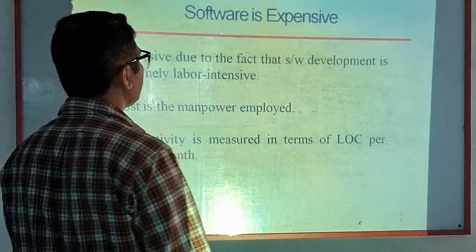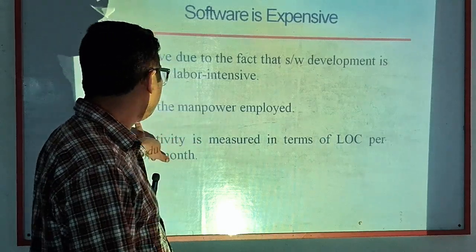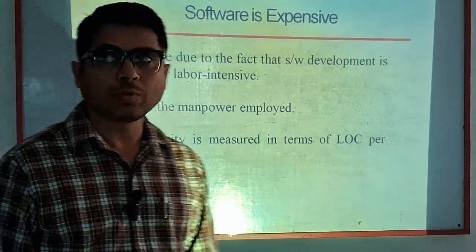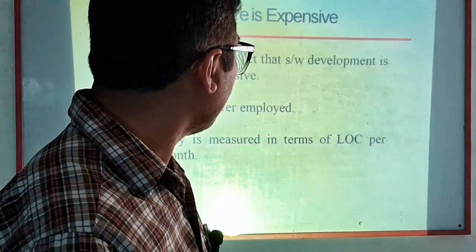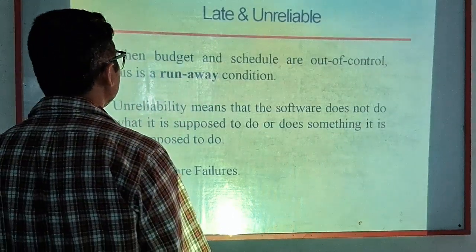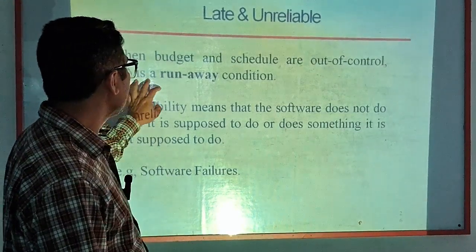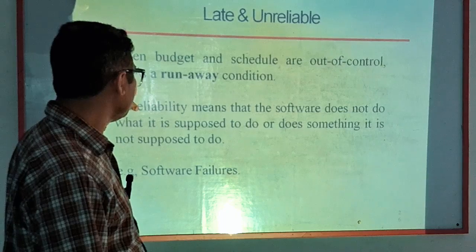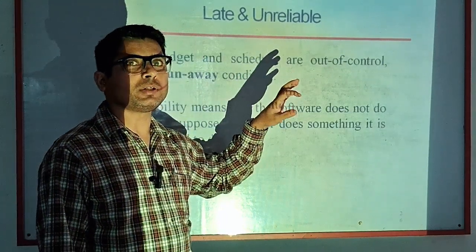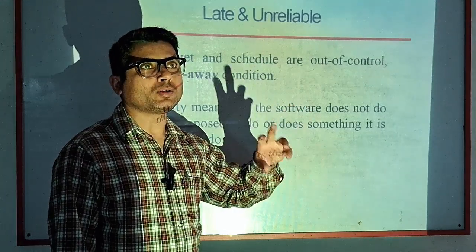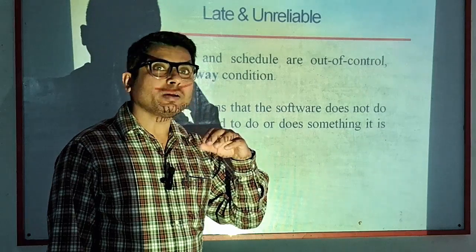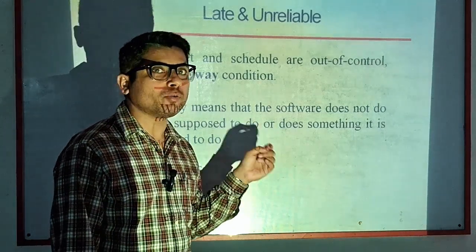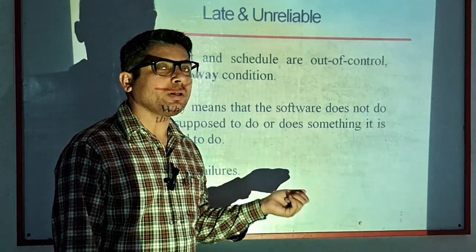Software is very expensive because software development is extremely labor intensive. Cost of manpower and productivity is measured in terms of lines of code (LOC) per person per month, which is why software costs are high. Software can also be late and unreliable — when budget and schedule go out of control, this is called a runaway condition. Unreliability means the software does not do what it is supposed to do.